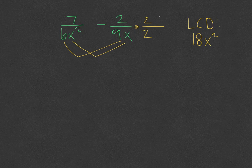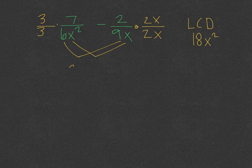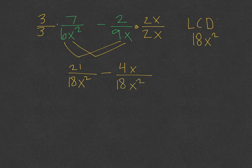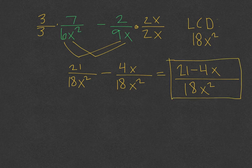I need to multiply the x by x to get x squared. For the first fraction, I need to multiply that 6 by 3, and the x squared is already x squared, so it's only the 3 that we need to multiply by. Going through and multiplying each of those fractions, we get 21 over 18x squared minus 4x over 18x squared. Now that their denominators are the same, we can just add the fractions: 21 minus 4x over 18x squared. And this would be our final answer for the subtraction of the two fractions.